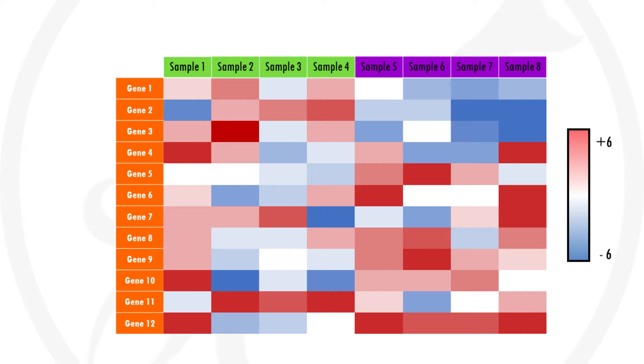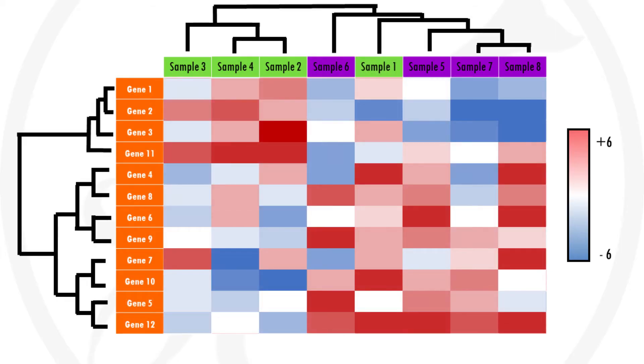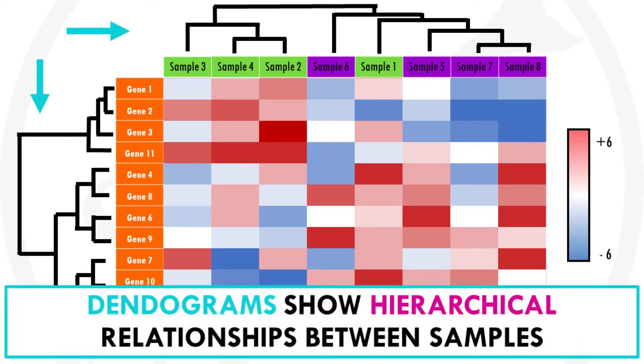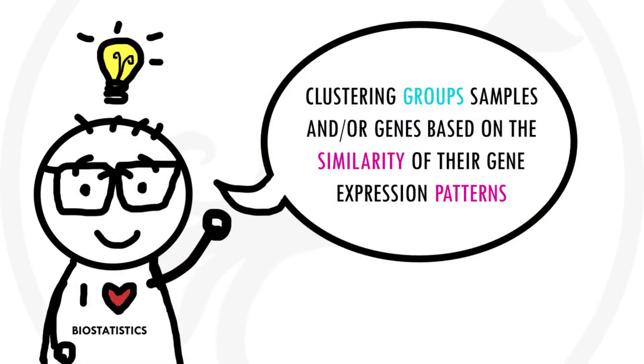A clustered heatmap looks something like this. The dendrograms on the sides just indicate the results of clustering both genes and samples. Clustered heatmaps are just heatmaps that are combined with clustering methods. This just means we group the samples and or the genes together based on the similarity of their gene expression pattern.